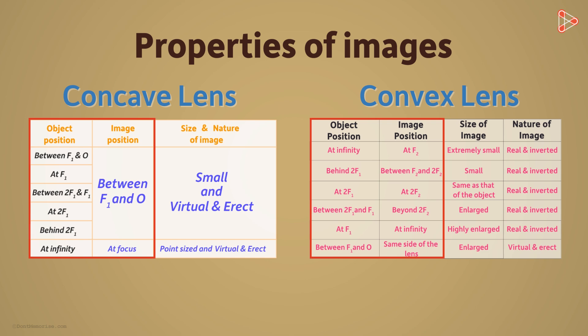There is an equation or formula which gives us the relation between the object's and the image's position. And that formula is what we call the lens equation.